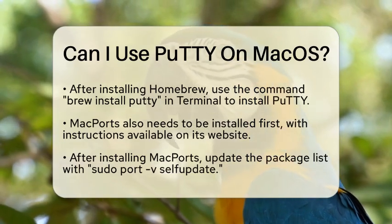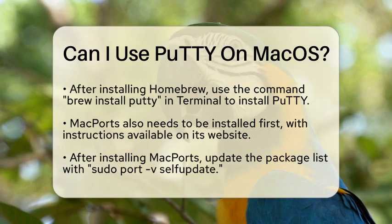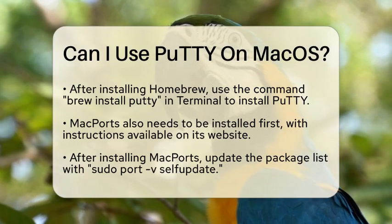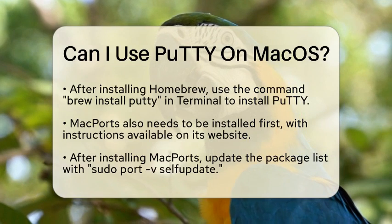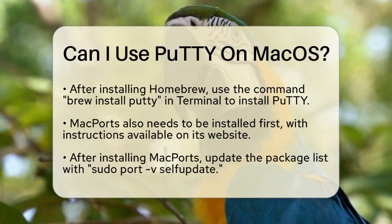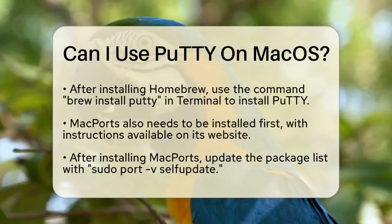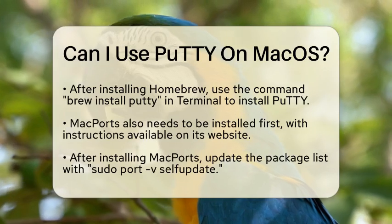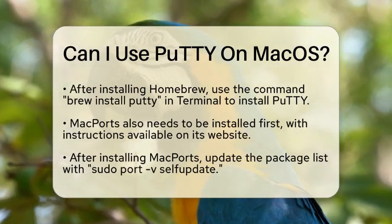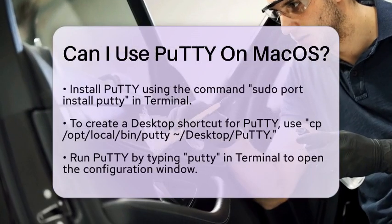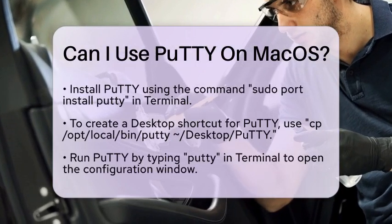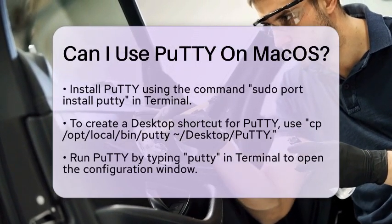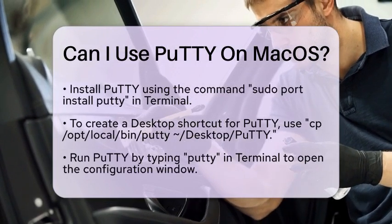If you prefer using MacPorts, you will need to install it first. You can find the installation instructions on the MacPorts website. After installing MacPorts, update your package list by typing 'sudo port -v selfupdate' in the terminal. Once that is complete, you can install PuTTY by typing 'sudo port install putty'. If you want to create a shortcut on your desktop, you can do that by typing 'sudo /opt/local/bin/putty putty'.